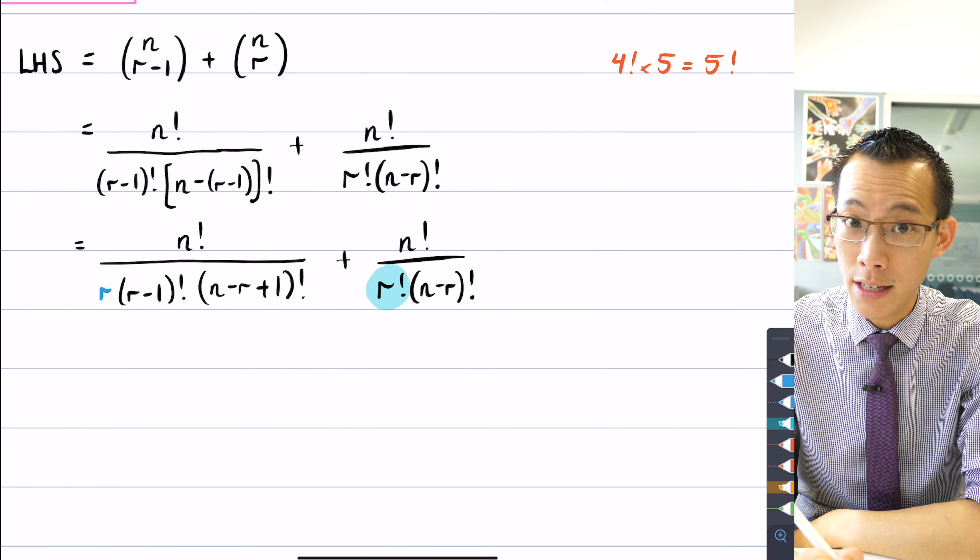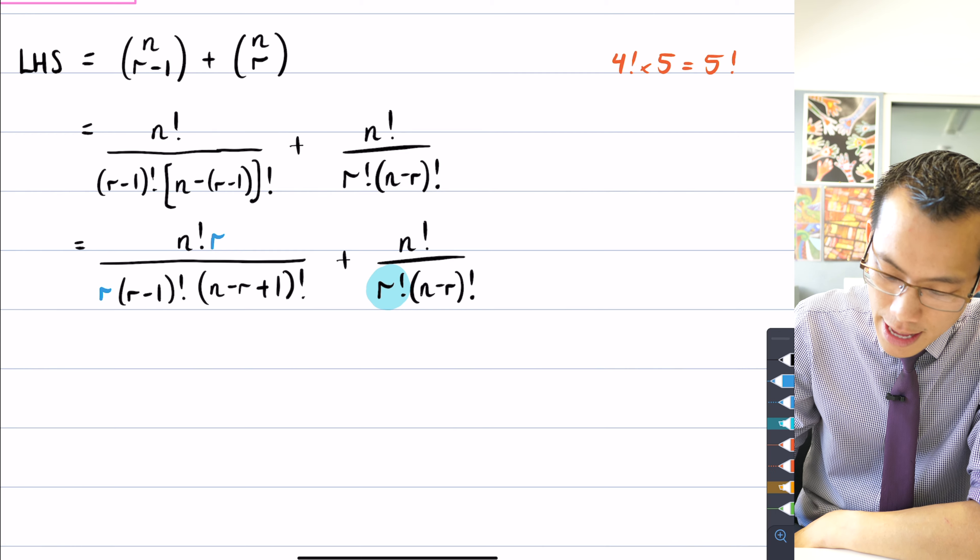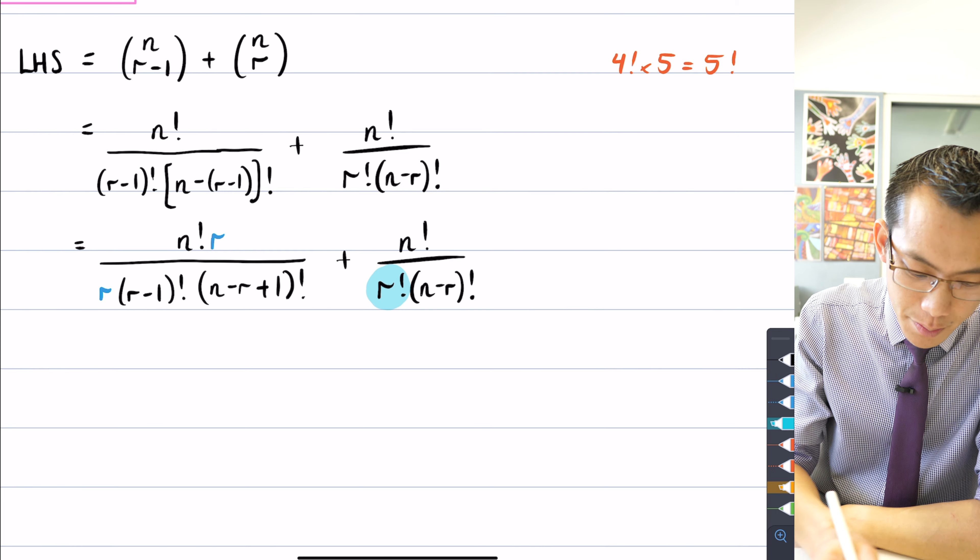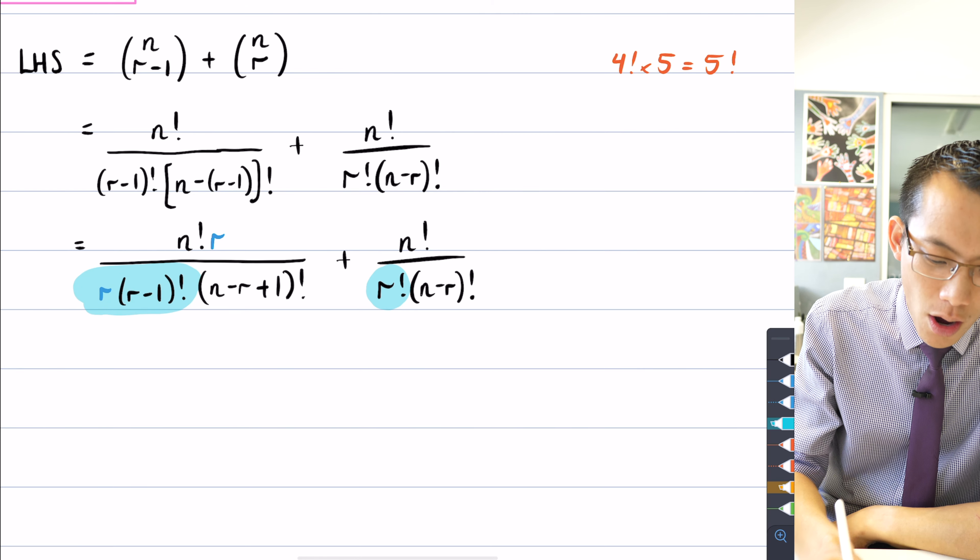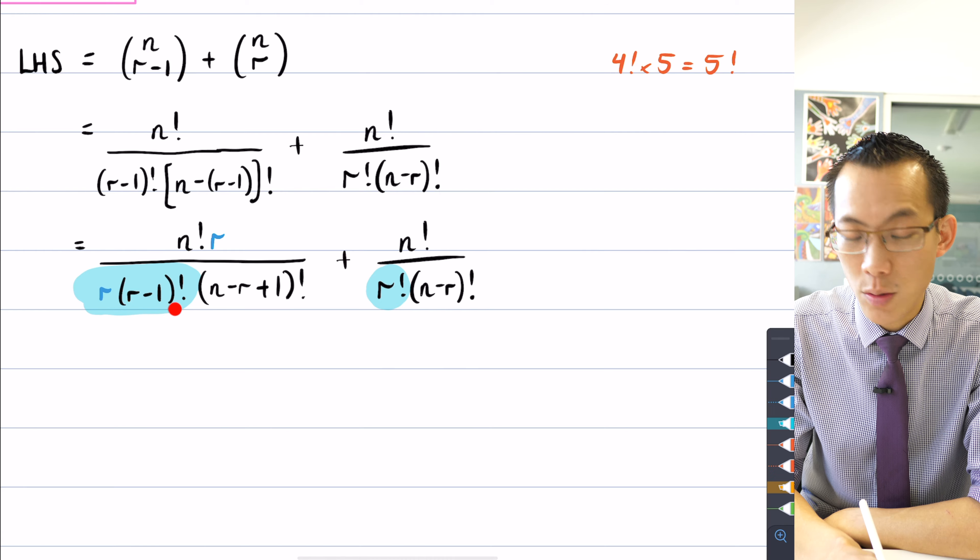If I multiply through by r here, of course you do it to the denominator, you better do it to the numerator. Then what I've got now is this whole term here will actually be r factorial. It's r times r minus one factorial.